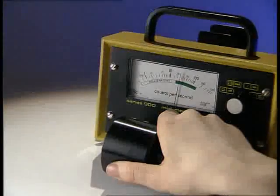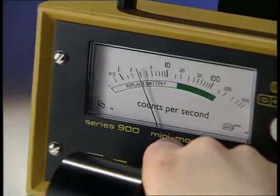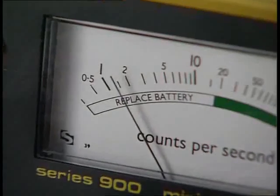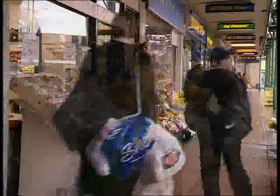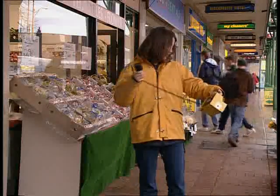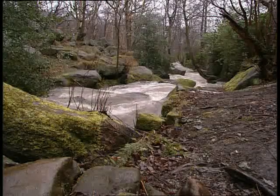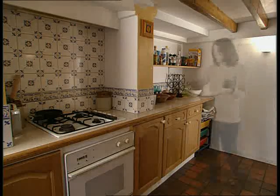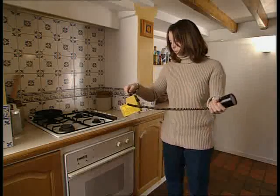Remove the radioactive source and the count falls, but it doesn't drop to zero. Wherever you are, there's always a low level of so-called background radiation. Whether you're out in the street, in the middle of the countryside, even inside your home, a Geiger counter continues to detect low levels of background radiation.